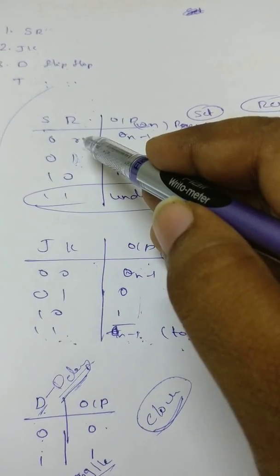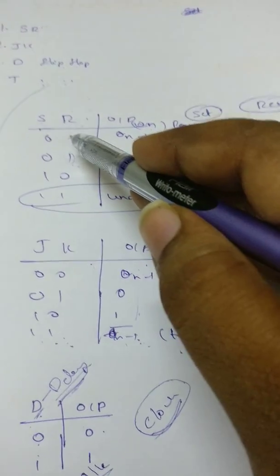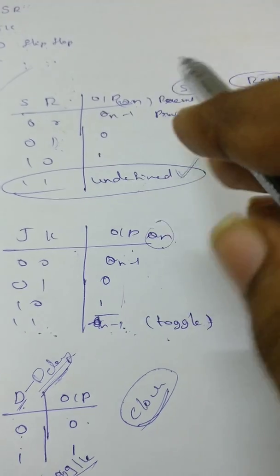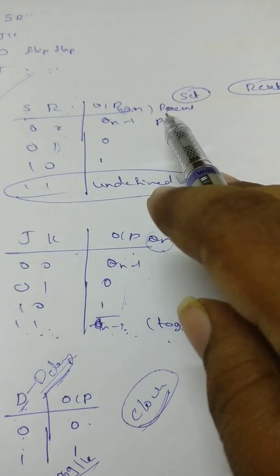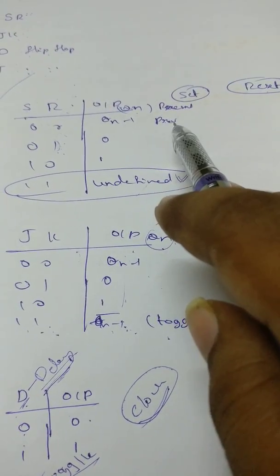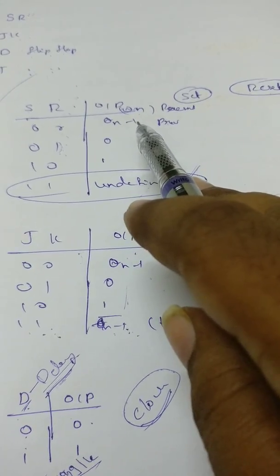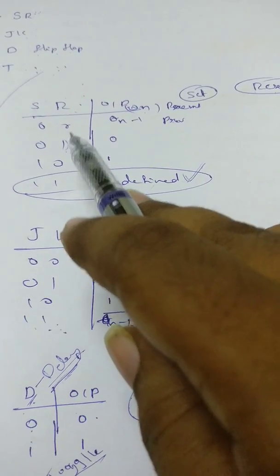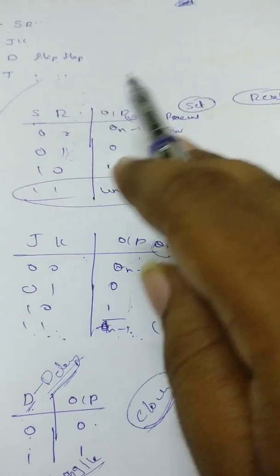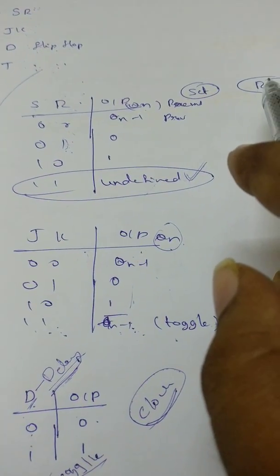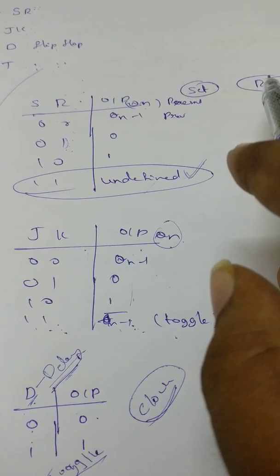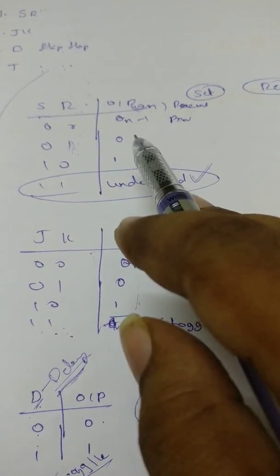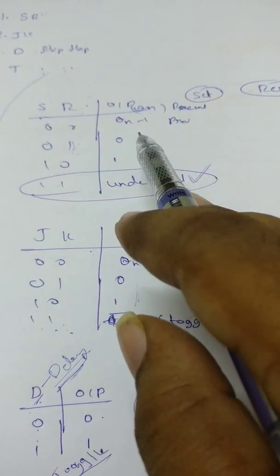In first case, we have both 00. Means you are not pressing any button. Not pressing any button means the present state equals the previous state, Qn equals Qn minus 1. There is no change in the state. In second case, we have one for R, means you are pressing the reset button. When you press the reset button, whatever the present state may be, the output will become 0.